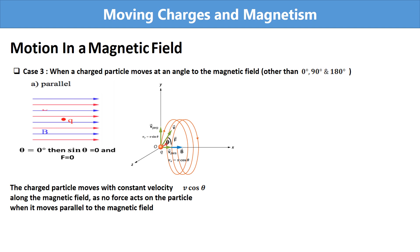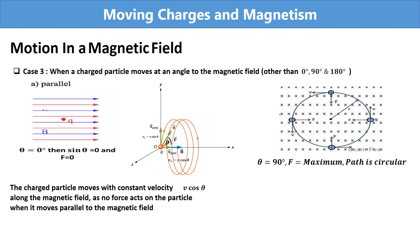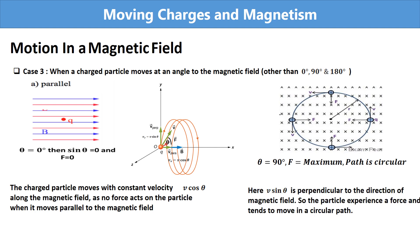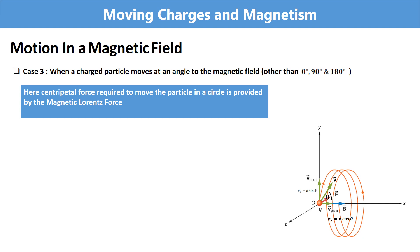When the particle is moving perpendicular to the magnetic field, that is θ equals 90 degrees, the force on the particle is maximum and the particle executes circular motion. In our diagram, vsinθ is perpendicular to the magnetic field, so the particle experiences a force and tends to move in a circular path. The centripetal force required to move the particle in a circle is provided by the magnetic force.